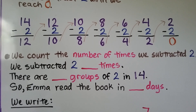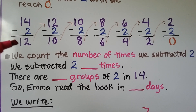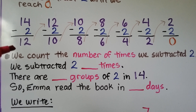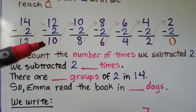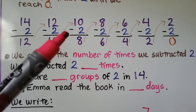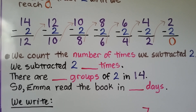We start with the dividend — how many chapters she has in the book — that's 14. She's reading two chapters every day, so we do 14 minus 2 equals 12. Now 12 is our difference, and it becomes our new minuend. We subtract 2 and get 10 for a difference. We keep subtracting 2 until we get to 0, then count the number of times we subtracted 2.